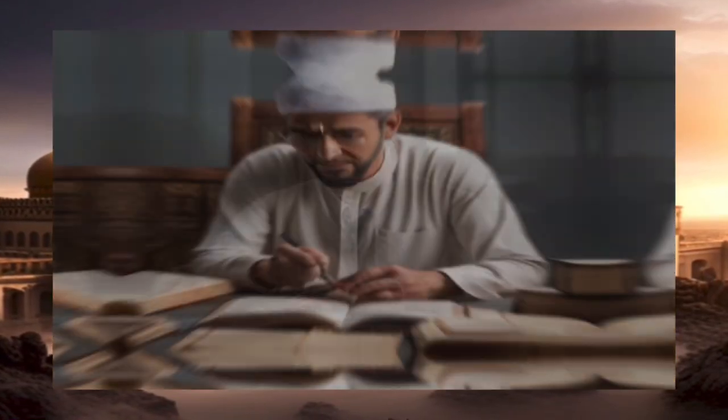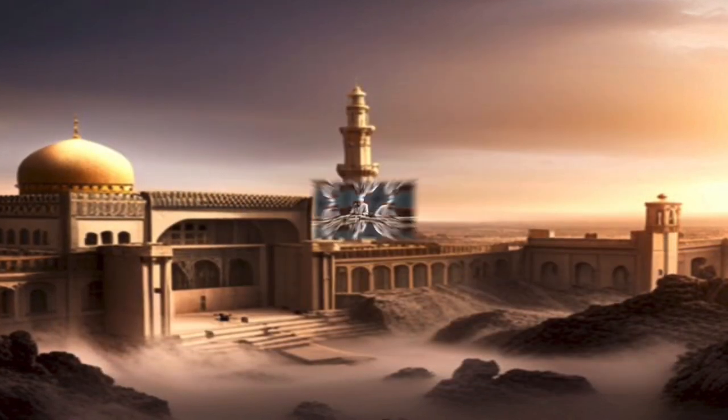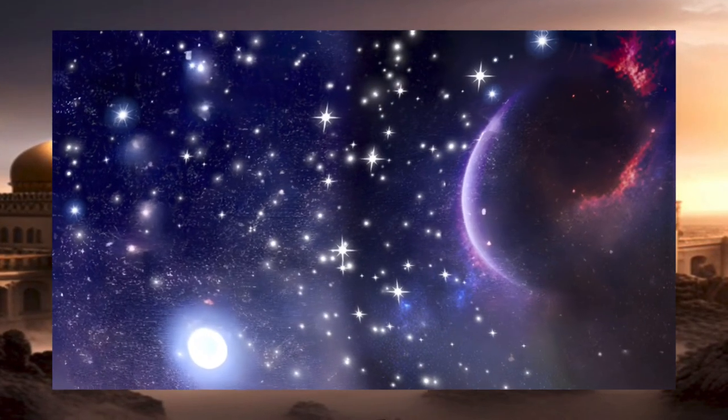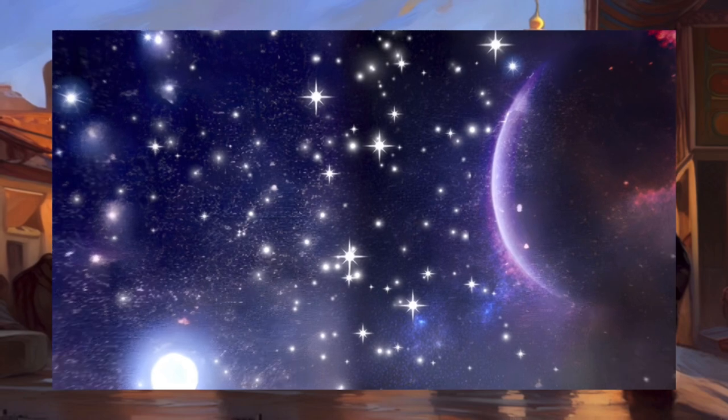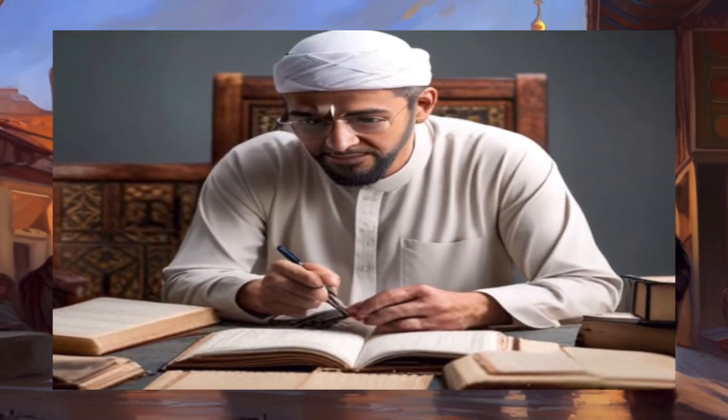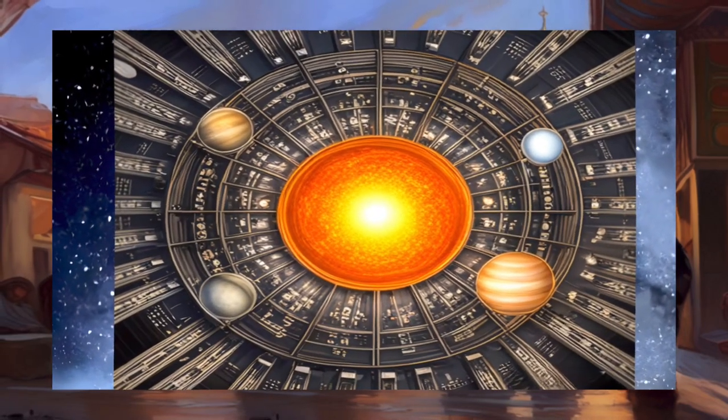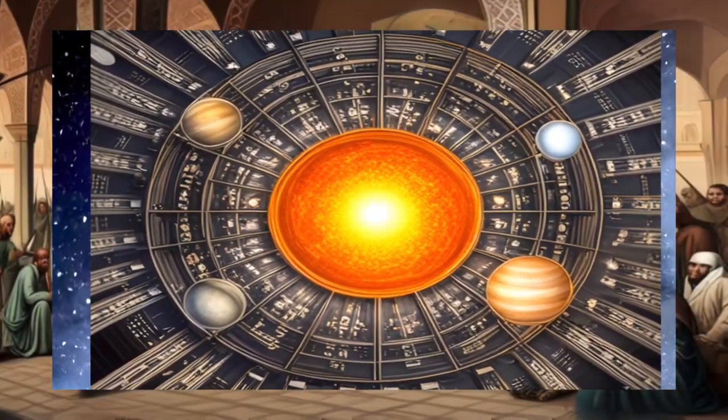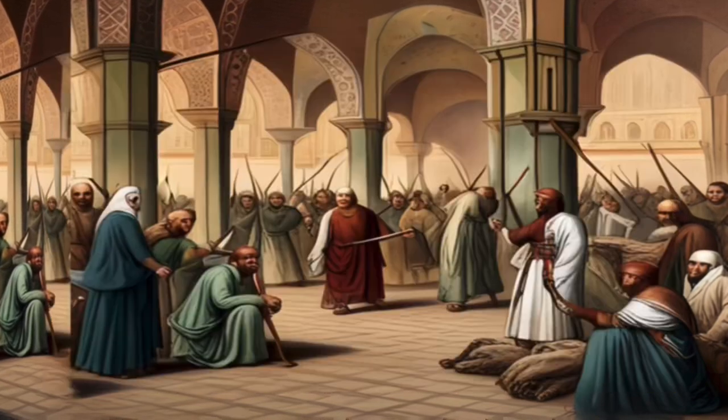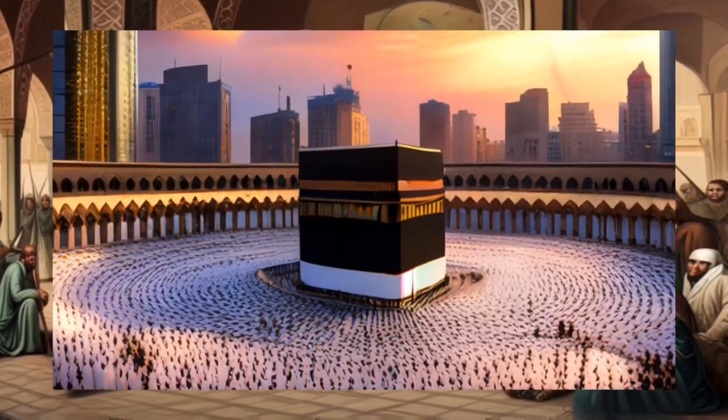In addition to his contributions in the field of algebra, Al Khwarezmi also made important contributions in the field of astronomy. He measured time using water clocks and studied the movements of celestial bodies. He compiled tables that showed the movements of the sun, moon, and planets in one year. These tables facilitated the prediction of prayer times and navigation.